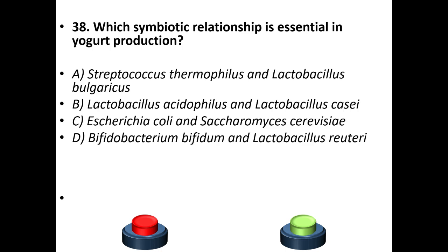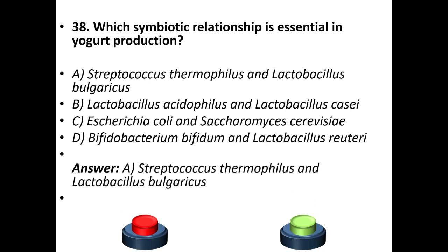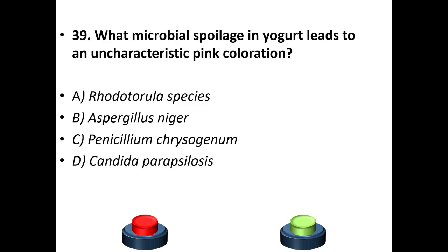Thirty-eighth question: which symbiotic relationship is essential in yogurt production? A: Streptococcus thermophilus and Lactobacillus bulgaricus. B: Lactobacillus acidophilus and Lactobacillus casei. C: E. coli and Saccharomyces cerevisiae. D: Bifidobacterium bifidum and Lactobacillus reuteri. Answer is A — Streptococcus thermophilus and Lactobacillus bulgaricus. Thirty-ninth question: what microbial spoilage in yogurt leads to uncharacteristic pink coloration? A: Rhodotorula species. B: Aspergillus niger. C: Penicillium chrysogenum. D: Candida parapsilosis. Answer is A — Rhodotorula species.